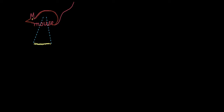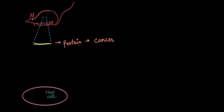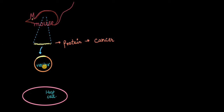Imagine you have discovered a gene from a mouse genome that codes for a protein that can cure cancer. The next thing you would want to do is create more and more of this protein, and for large-scale production we need factories. The factories we use here are host cells — mostly bacterial host cells — inside which our gene gets expressed and we extract the proteins. To introduce the gene into a host cell, we use a vector. These vectors take in our gene of interest and get inside a host cell through a process called transformation.